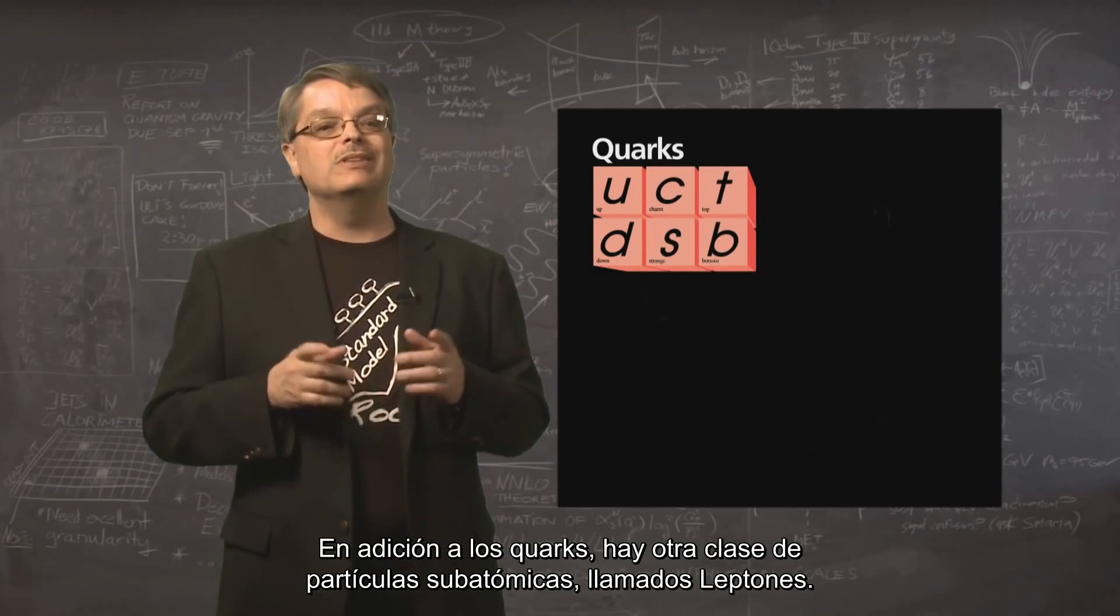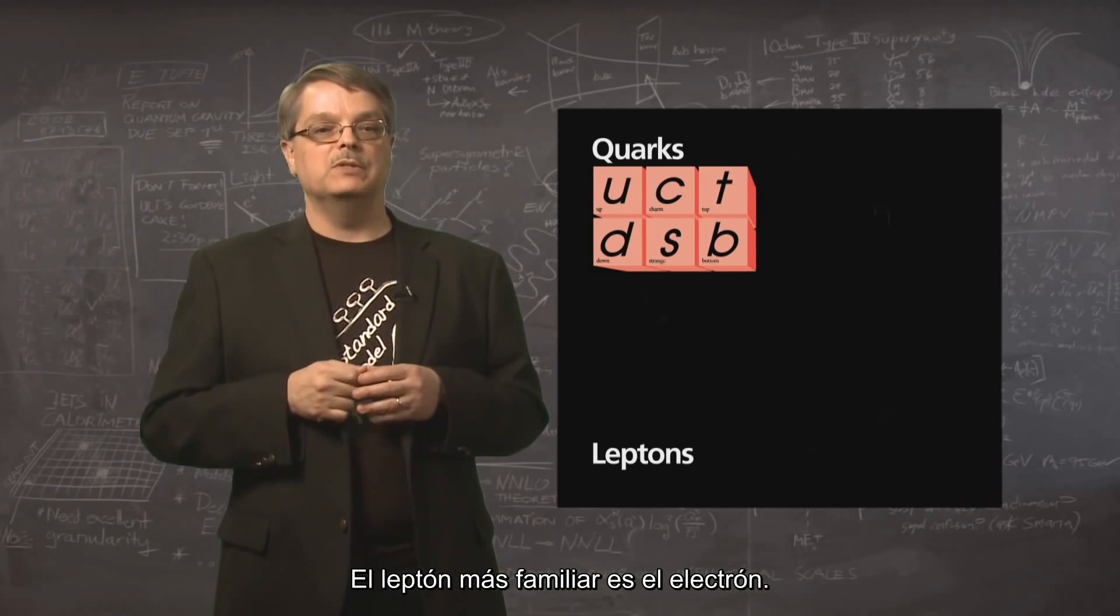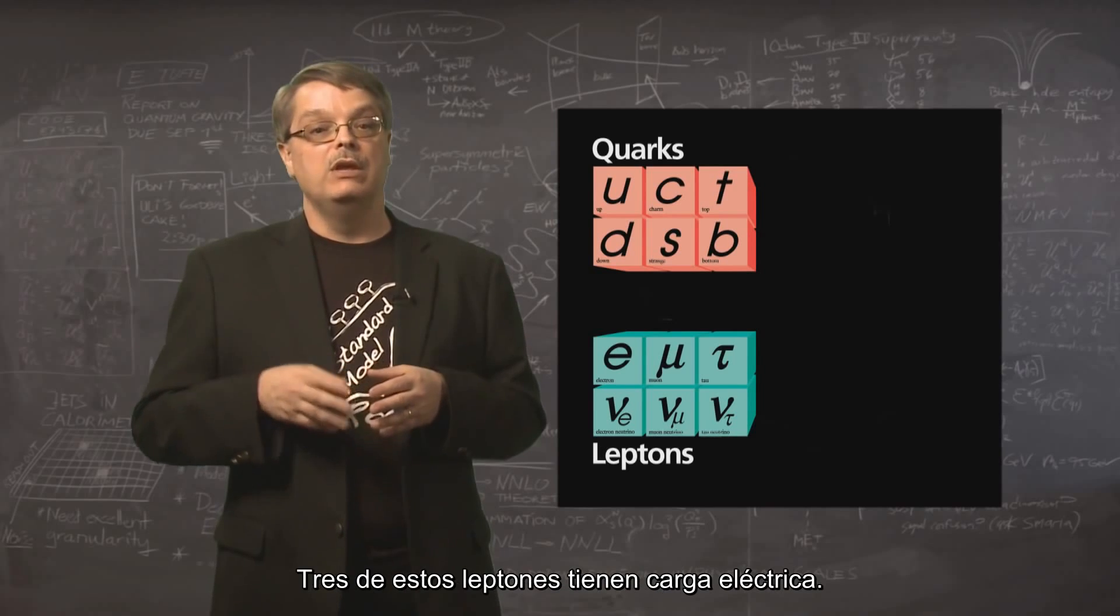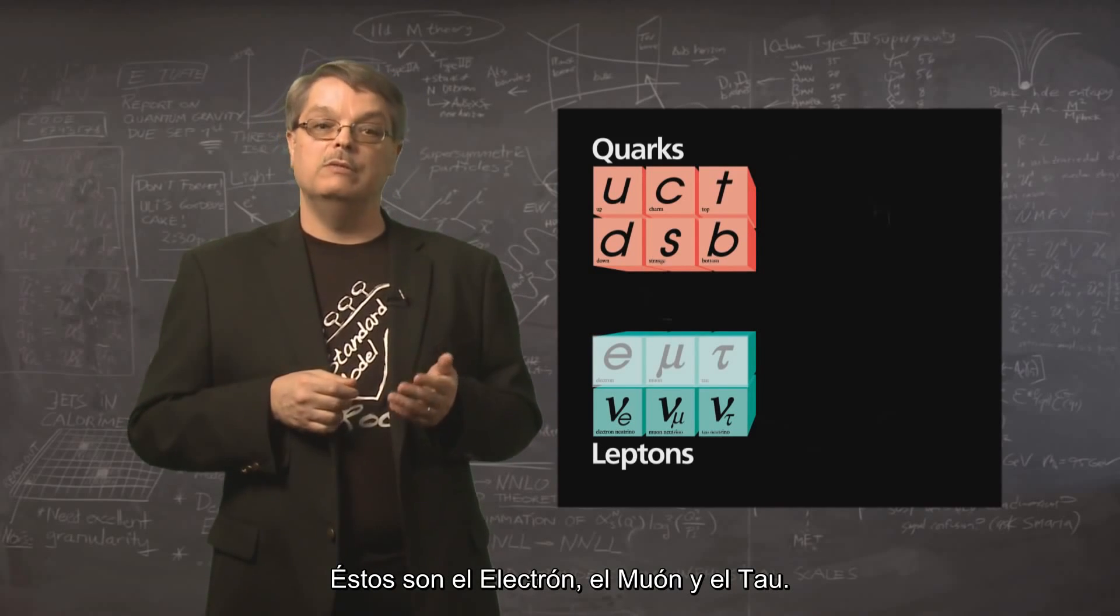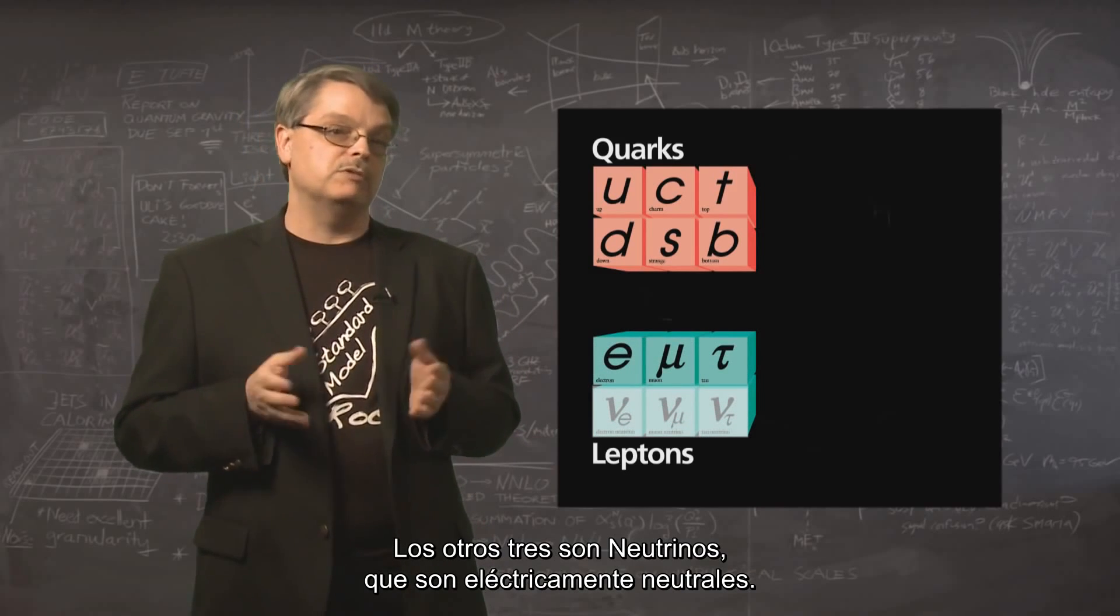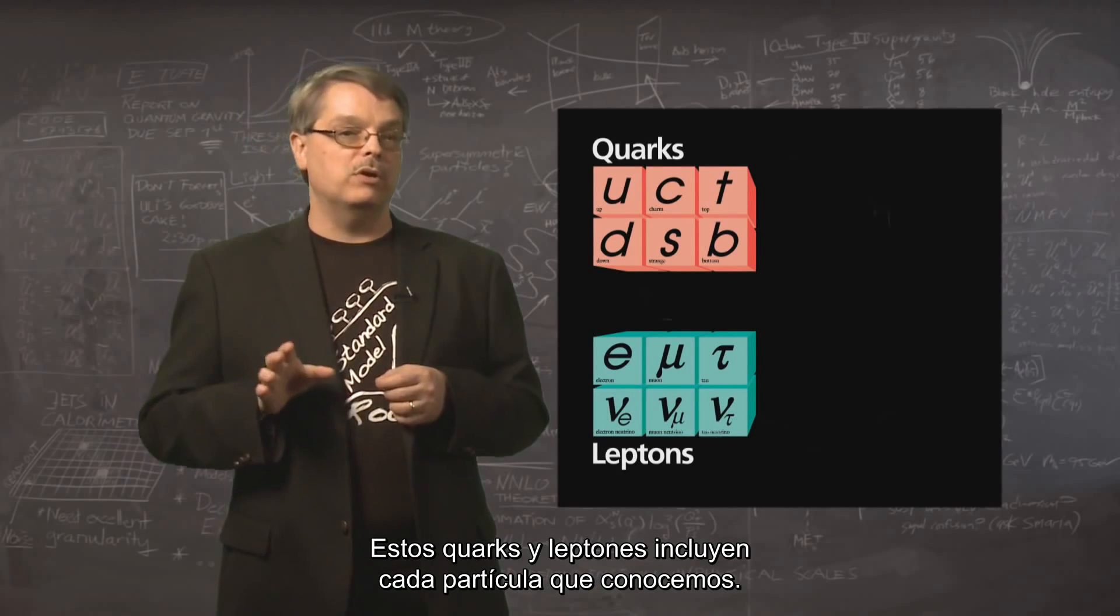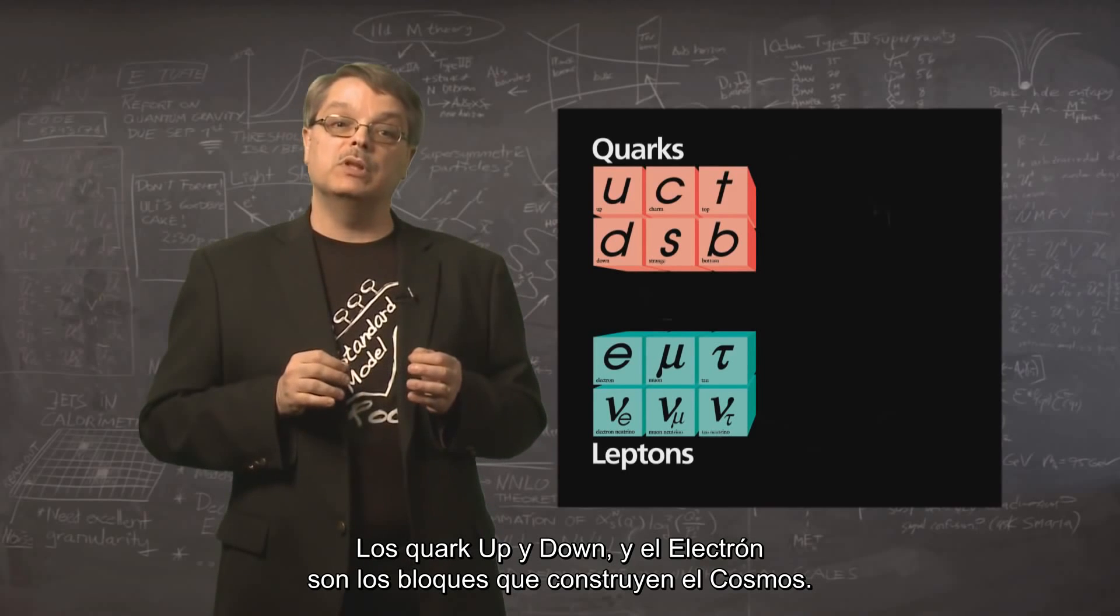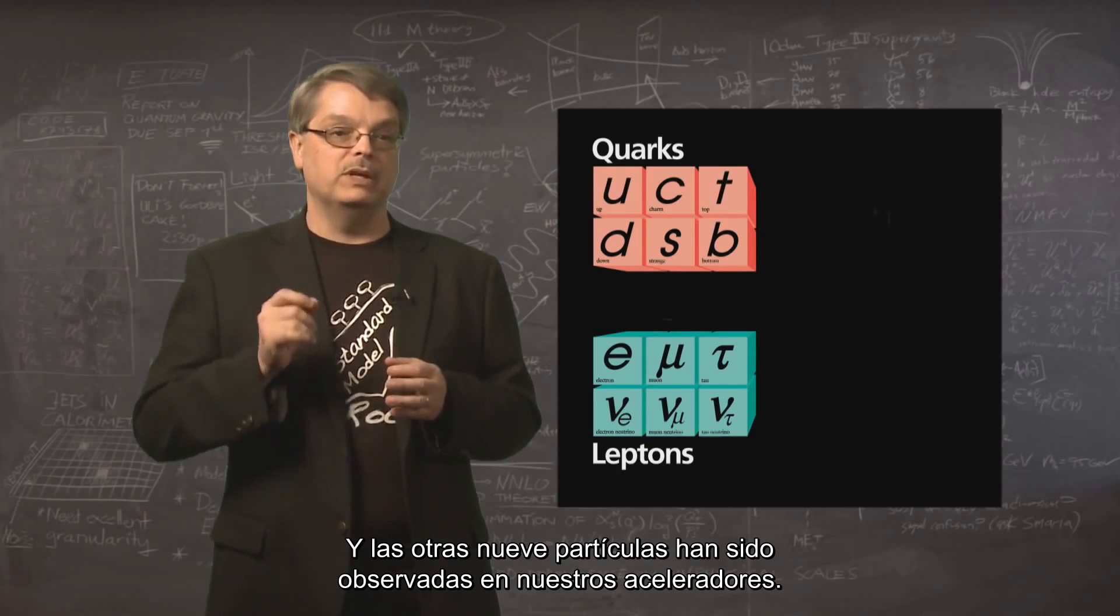In addition to the quarks, there's another class of subatomic particles called leptons. The most familiar lepton is the electron, although it turns out that there are six leptons as well. Three of these leptons have electrical charge. These are the electron, the muon, and the tau. The other three are neutrinos, which are electrically neutral. These quarks and leptons include every particle that we know of. The up and down quarks and the electron are the building blocks of the cosmos, and the other nine particles have all been observed in our accelerators.